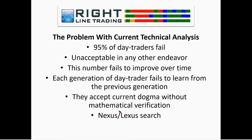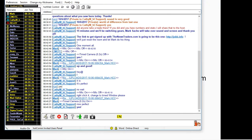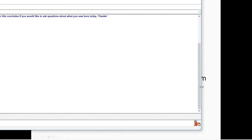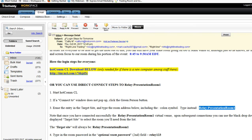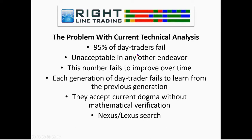There is a big problem with current technical analysis: 95% of day traders fail. This would be unacceptable in any other field. In architecture or medicine, if there was a 95% failure rate, a rigorous scientific analysis would be done, the ineffective components identified and removed, and the effective components expanded upon. But for some reason this doesn't take place with technical analysis, and that 95% failure rate never seems to improve.